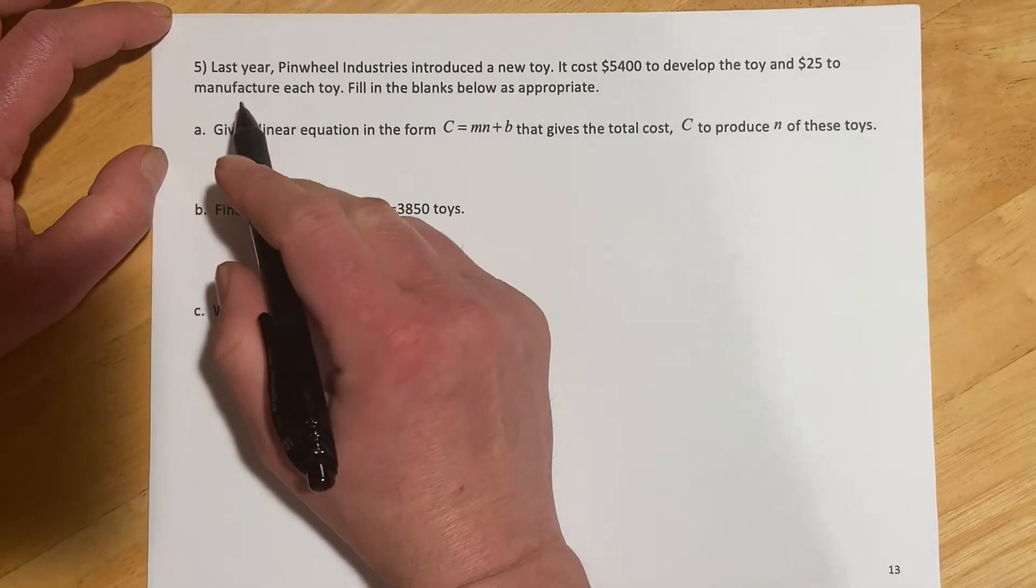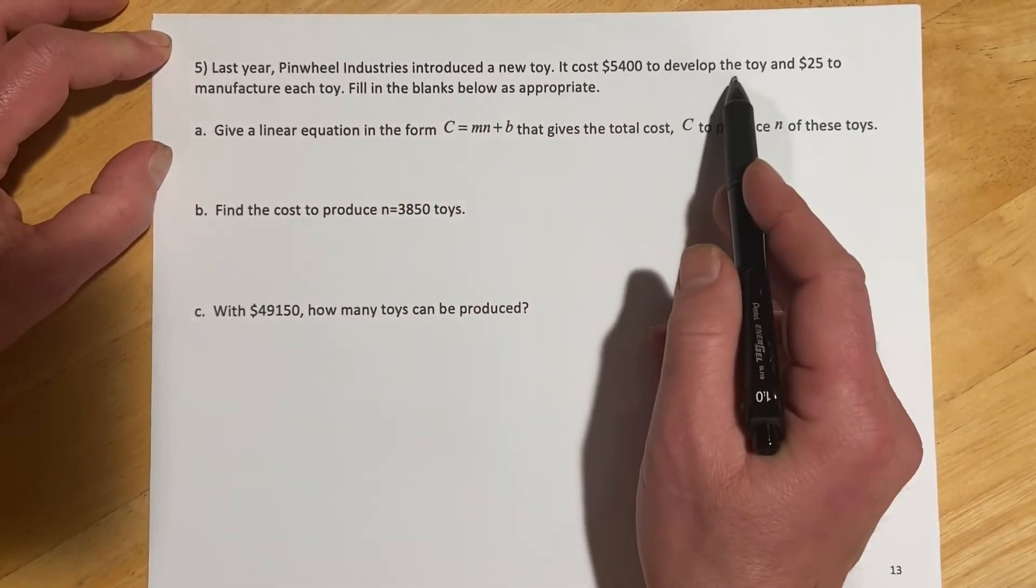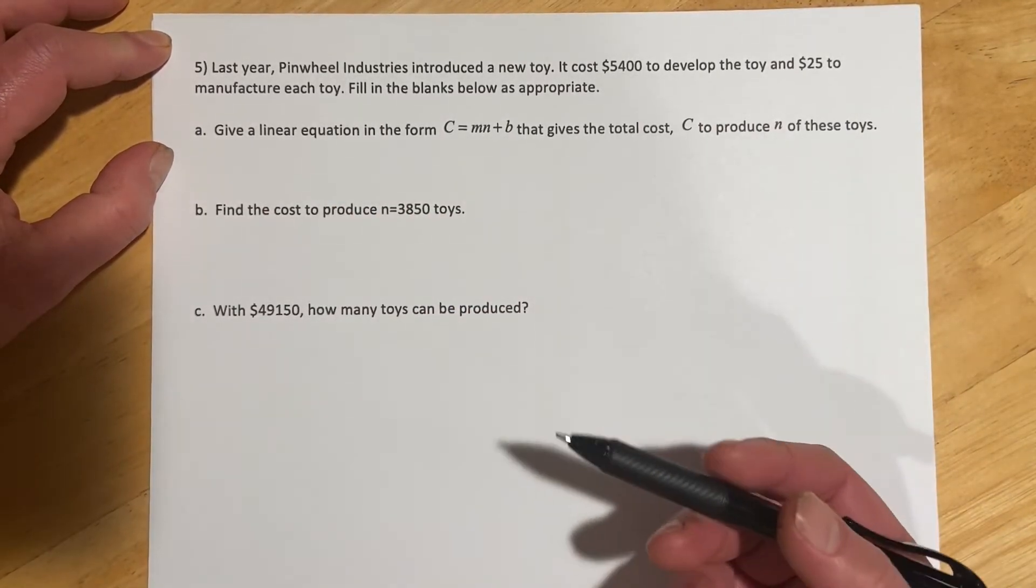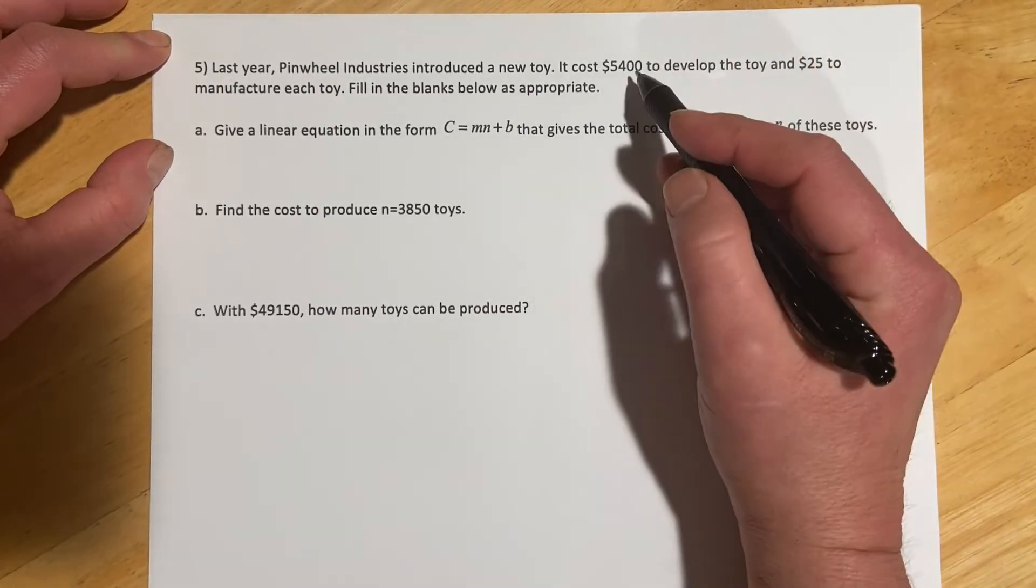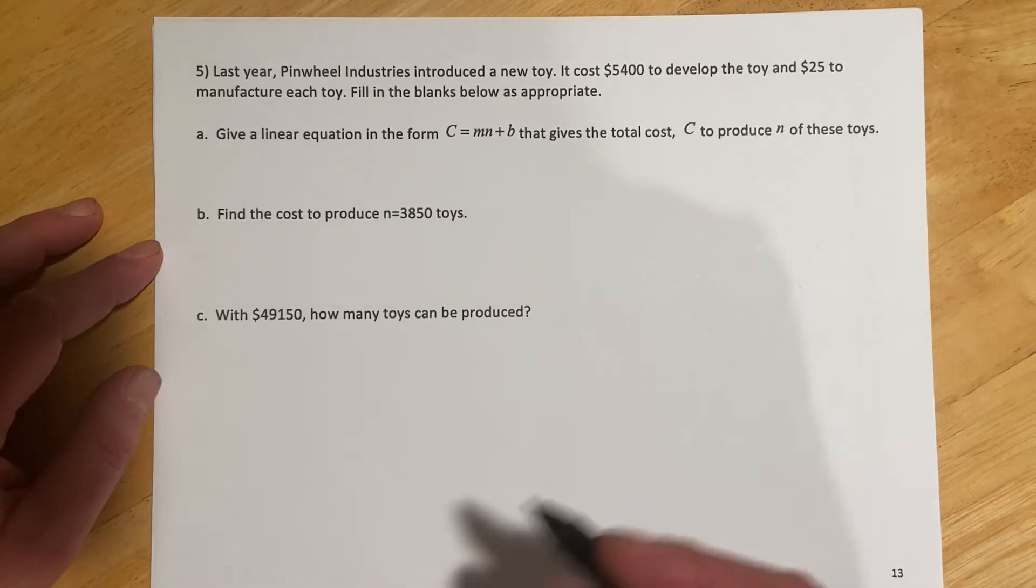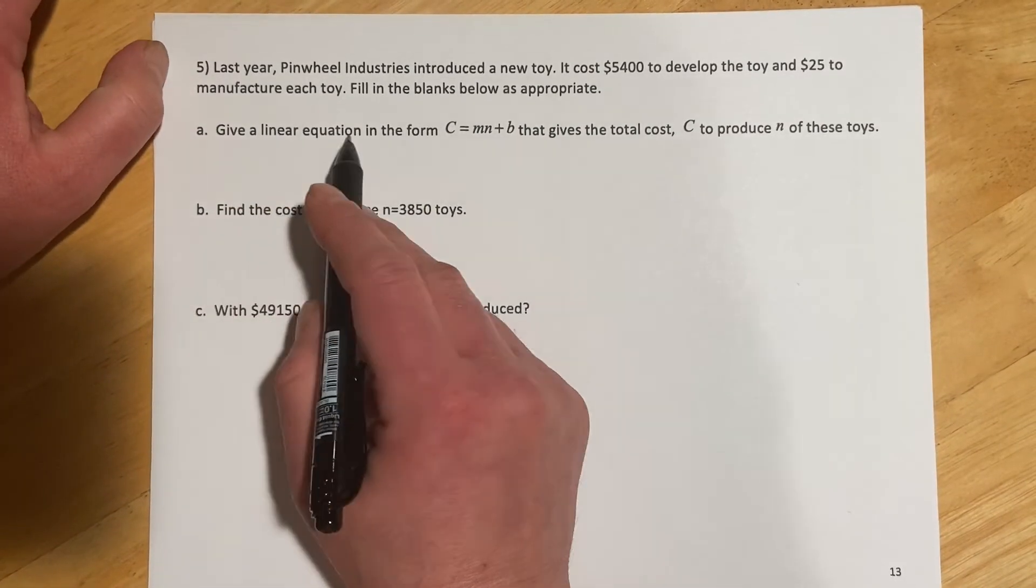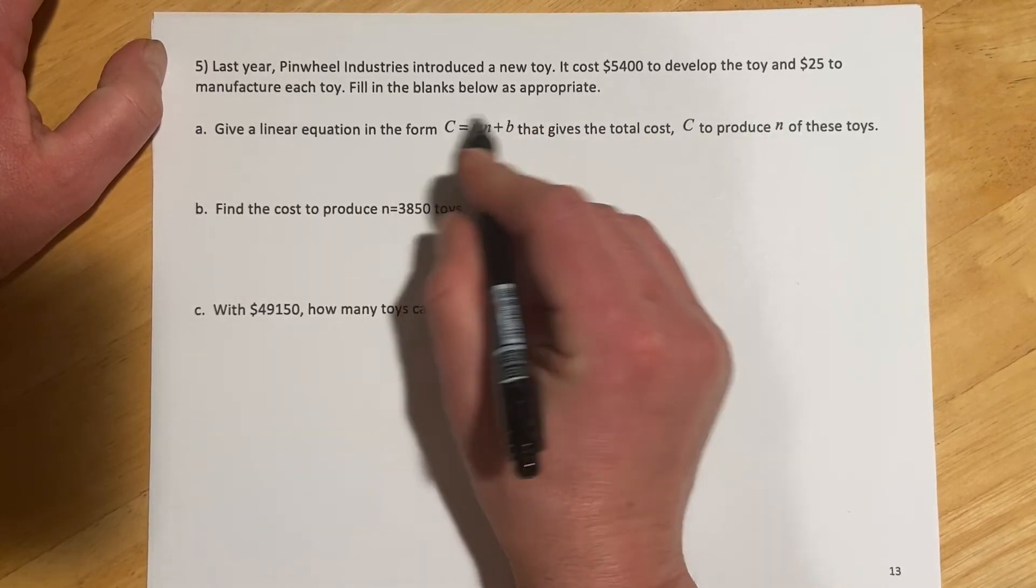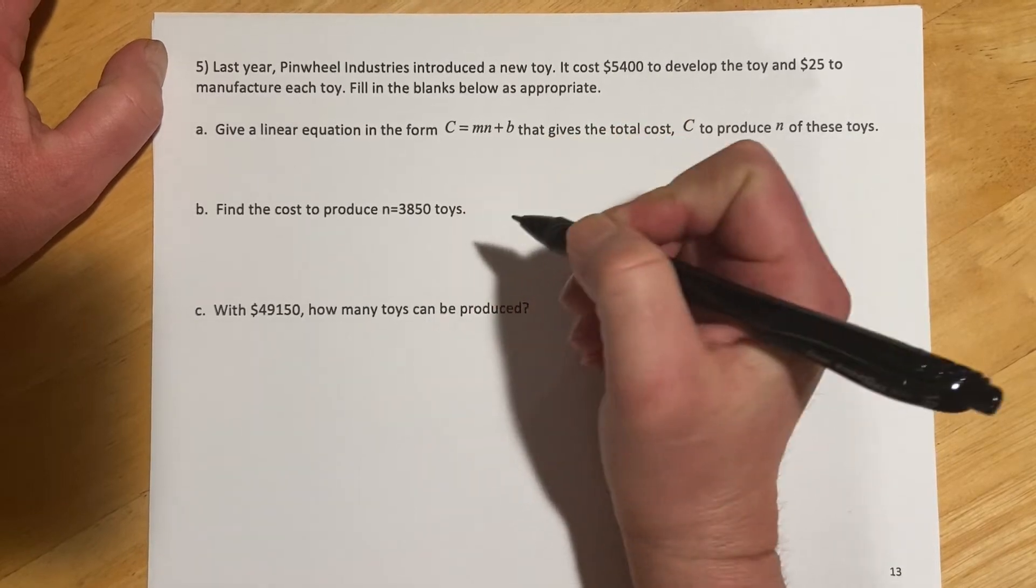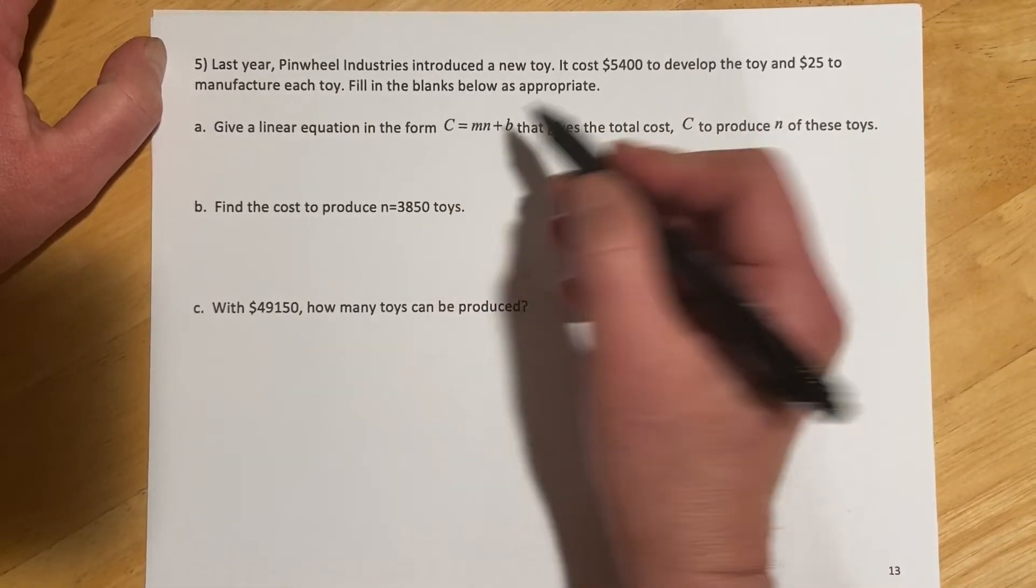Okay, this example is pretty similar. So last year, Pinwheel Industries introduced a new toy. It cost $5,400 to develop the toy, and $25 to manufacture each toy. So if we make none of these things, we spent $5,400 to figure out how to make them. And then for each one we're going to make, it costs us $25. Give a linear equation in the form, and so it's the same thing. They're changing the letters around, but still slope times an input plus however much we're starting with.